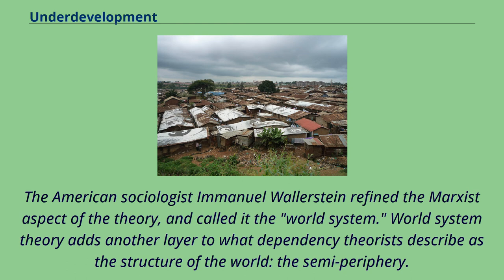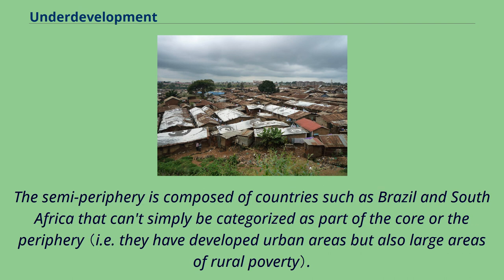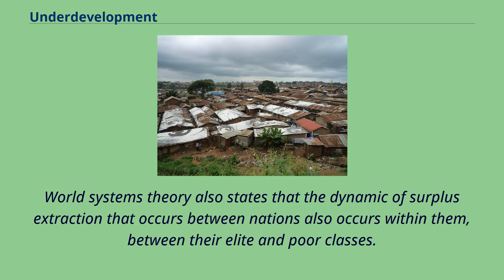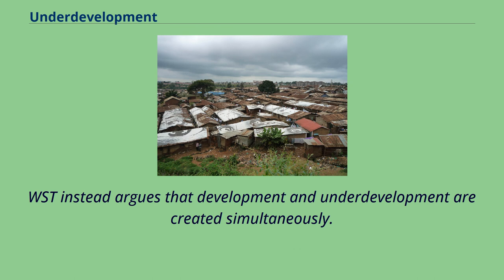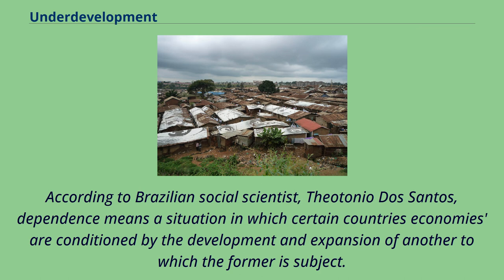The American sociologist Immanuel Wallerstein refined the Marxist aspect of the theory and called it World Systems Theory. World Systems Theory adds another layer to what dependency theorists describe as the structure of the world: the semi-periphery. The semi-periphery is composed of countries such as Brazil and South Africa that cannot simply be categorized as part of the core or the periphery. World Systems Theory also states that the dynamic of surplus extraction that occurs between nations also occurs within them, between their elite and poor classes. According to this structure — which includes a core, a periphery, and a semi-periphery — not every nation can develop simultaneously.